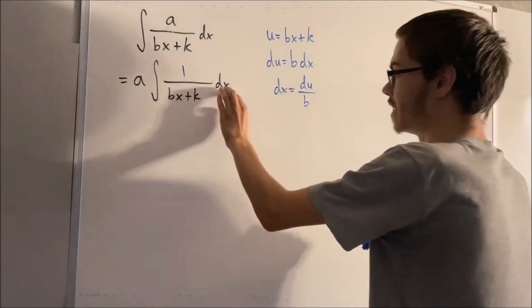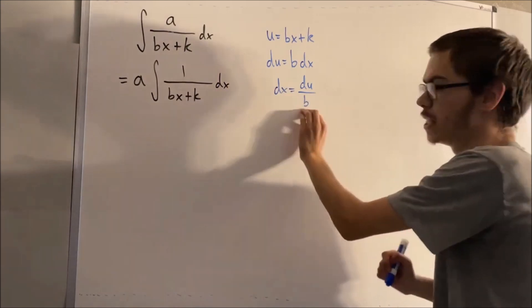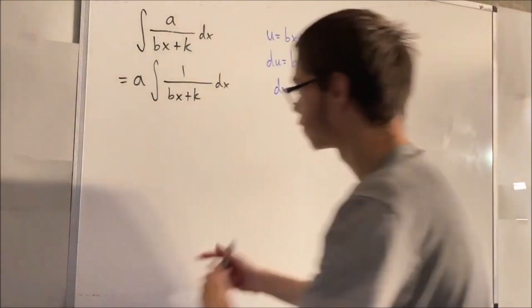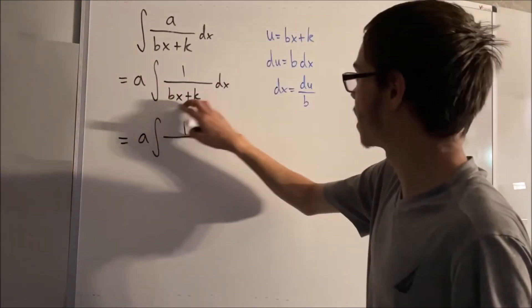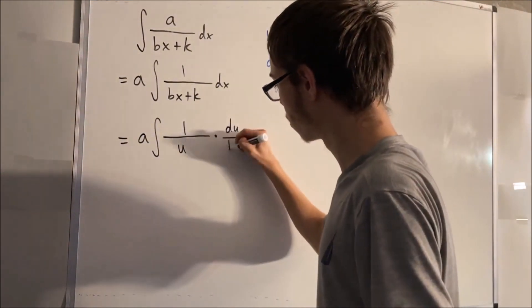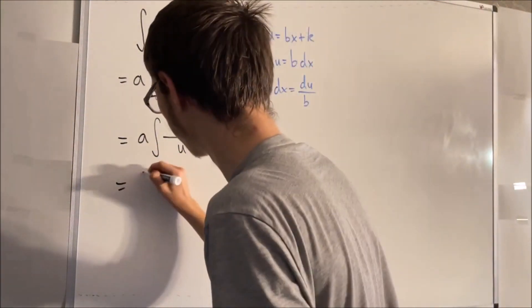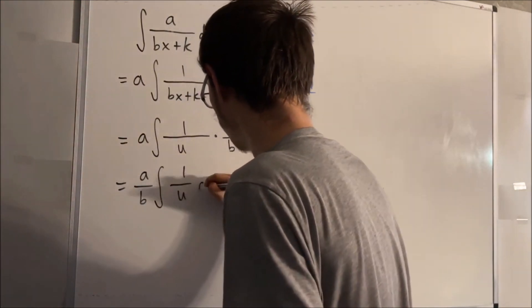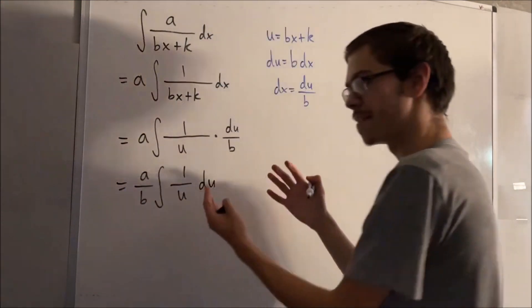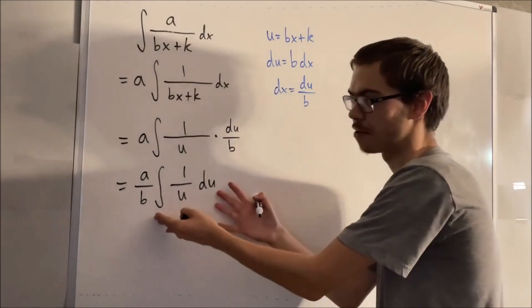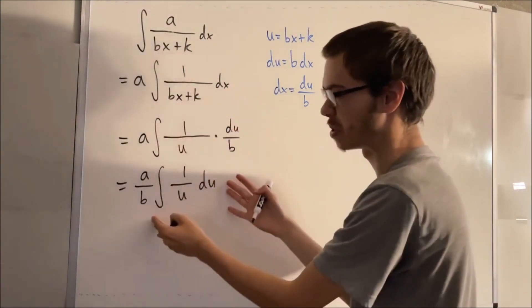So we're going to be replacing the dx with du over b. And we can move the b to the outside of the integral. It turns out that this is the integral we're evaluating now after performing the u substitution.